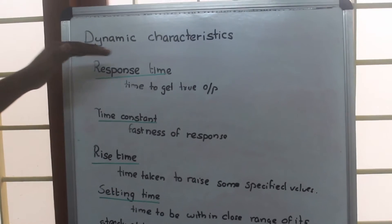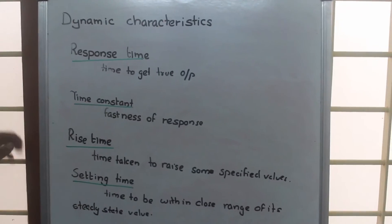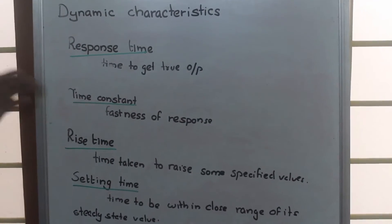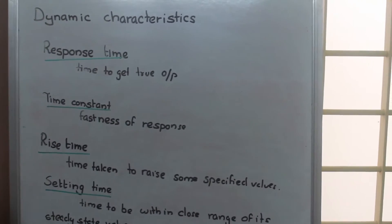Now we are going to discuss the dynamic characteristics in measurement systems. These include response time, time constant, rise time, and settling time.